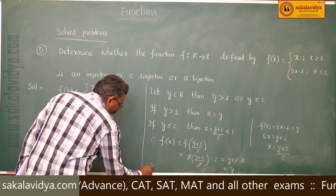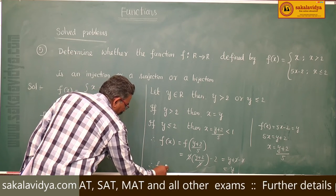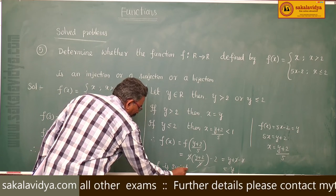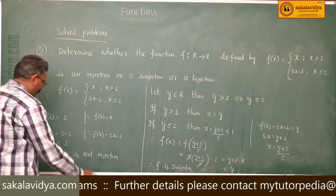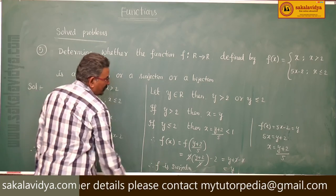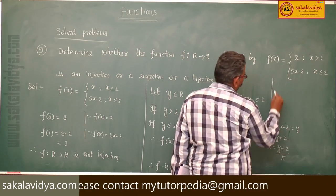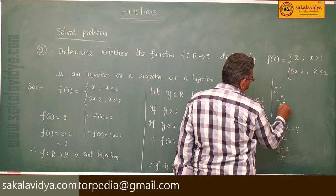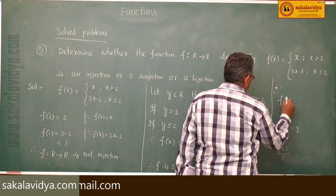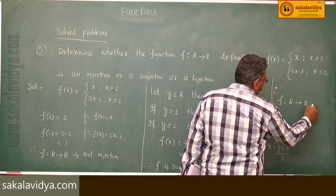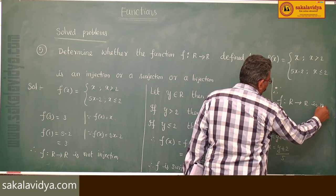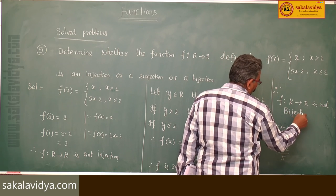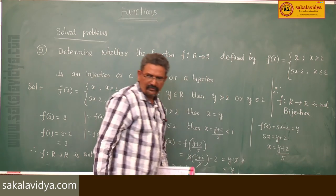Therefore f is a surjection. Since it is not an injection but is a surjection, f: R → R is not a bijection.